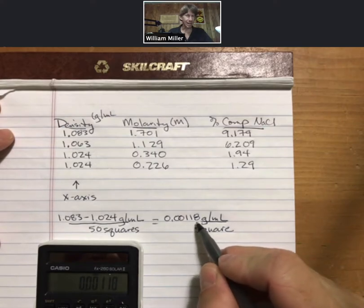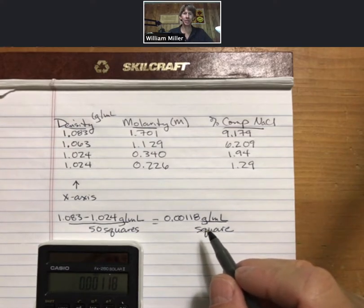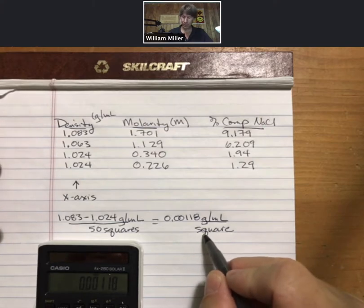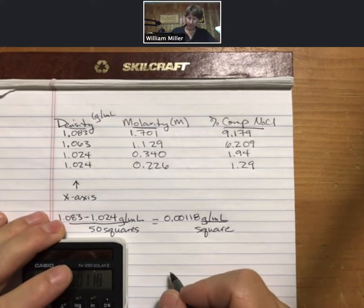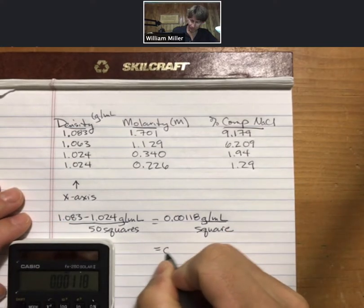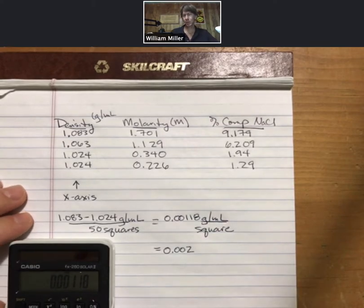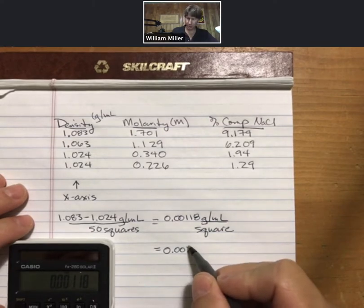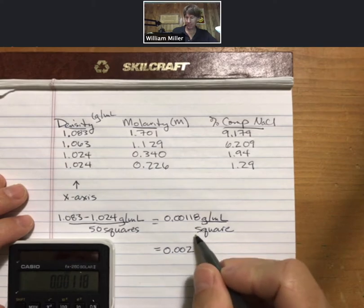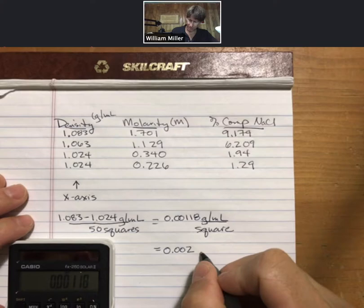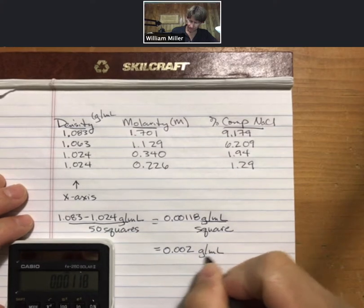Now, this is not a nice round number. When you make a graph, it helps you to make the graph, and it helps others to read the graph when each square is a nice round number. The closest one I'm going to do is 0.002. Of course, this number has to be bigger than the number that we've got before. 0.002 grams per milliliter per square.